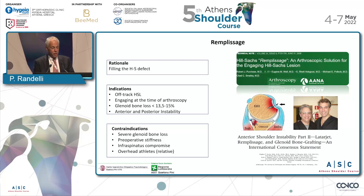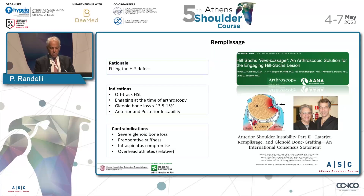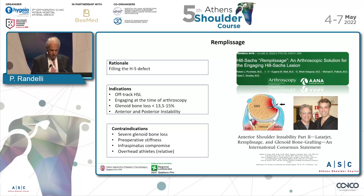That's why remplissage came out with Eugene Wolf, to fill the defect in the humeral head. The indications are off-track Hill-Sachs lesion engaging at the time of arthroscopy, glenoid bone loss that should stay inferior to 13.5% to 15%, and anterior instability. You can even treat patients with combined anterior and posterior instability. Contraindications are severe glenoid bone loss, preoperative stiffness, infraspinatus compromise, and overhead athletes — but this last one is relative, really, at least in my experience.